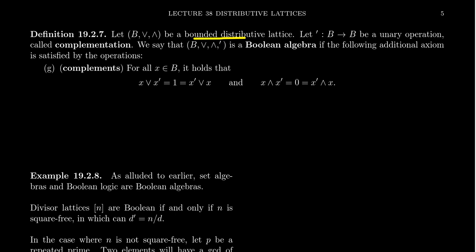So with regard to meets and joins, you're associative, commutative, all elements are idempotent for both operations, and we have absorption and distributive laws. Bounded means you have identities. A Boolean algebra is a bounded distributive lattice for which we now have the complement axiom: if you take X join its complement, you get back 1, and this holds on both sides. And the complement also has the property that X meet X' equals 0, which also holds on both sides.